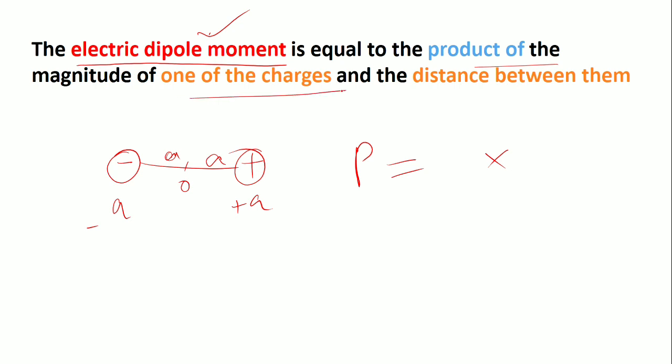I choose Q, and the distance between them is 2a. So P equals q times 2a. This is the dipole moment.